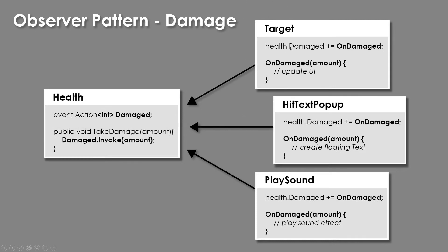For our specific example, we're going to look at a damage system. We may have a health system that has an event for when the player is damaged. When this thing is damaged, we want to send out the notification and optionally provide the damage amount. On the health script, we may have a method called take damage — anything that wants to apply damage calls health.takeDamage with an amount, and the health script tells the damaged event to send out the notification with that amount. Various things in the level may then respond.